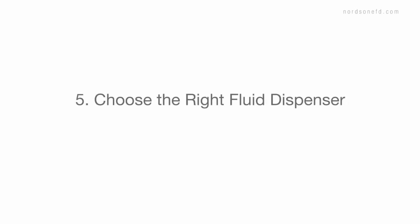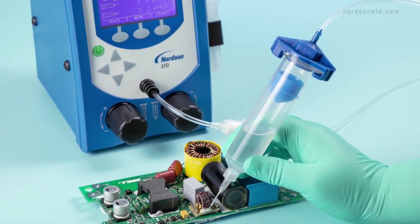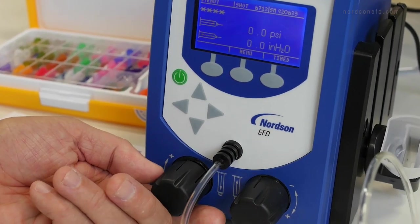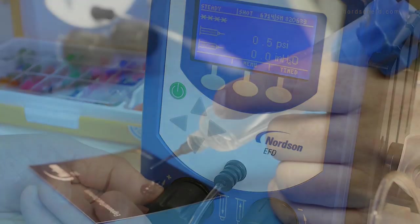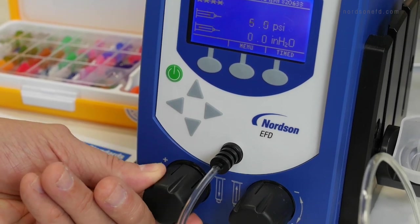Fifth, choose the right fluid dispenser. With its 15 PSI regulator, EFD's Ultimis II dispenser offers the best control for thin CAs. You can fine tune time and pressure adjustments to dispense the right amount. And you can easily control the vacuum to prevent dripping and drooling.